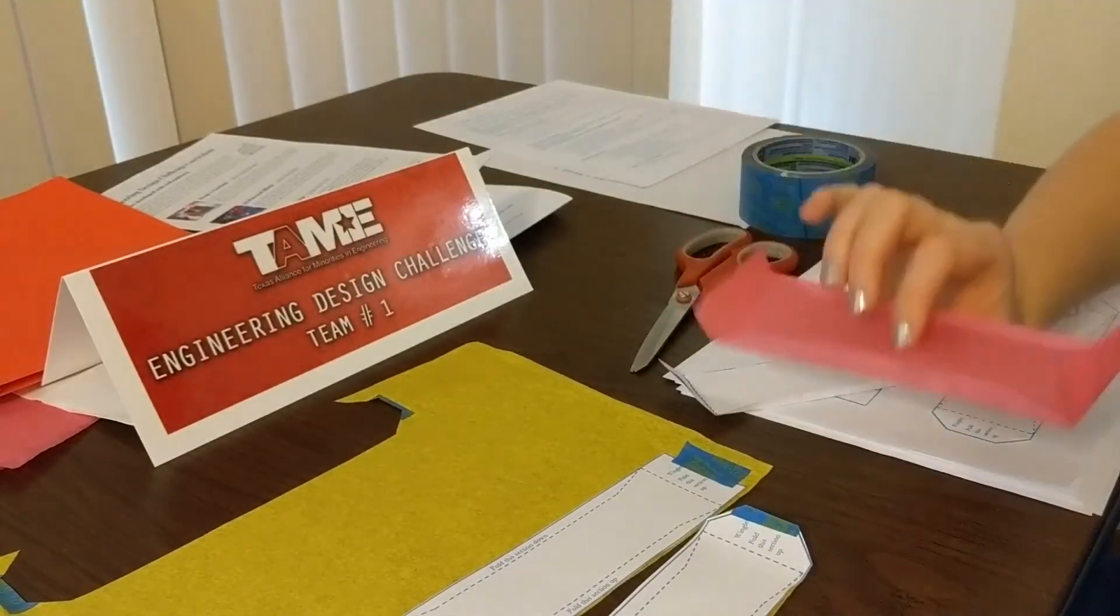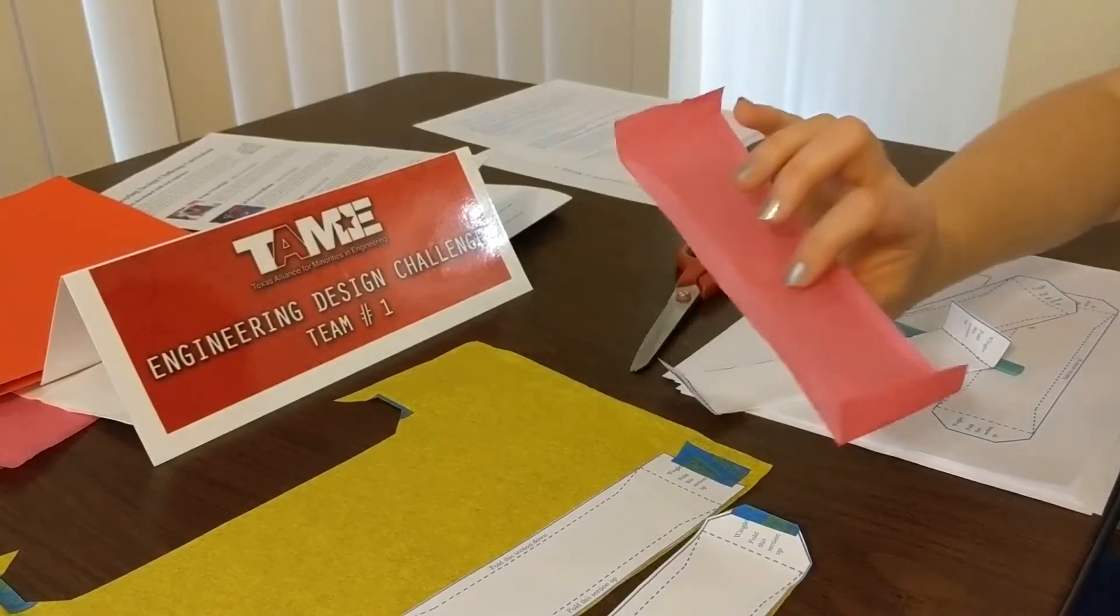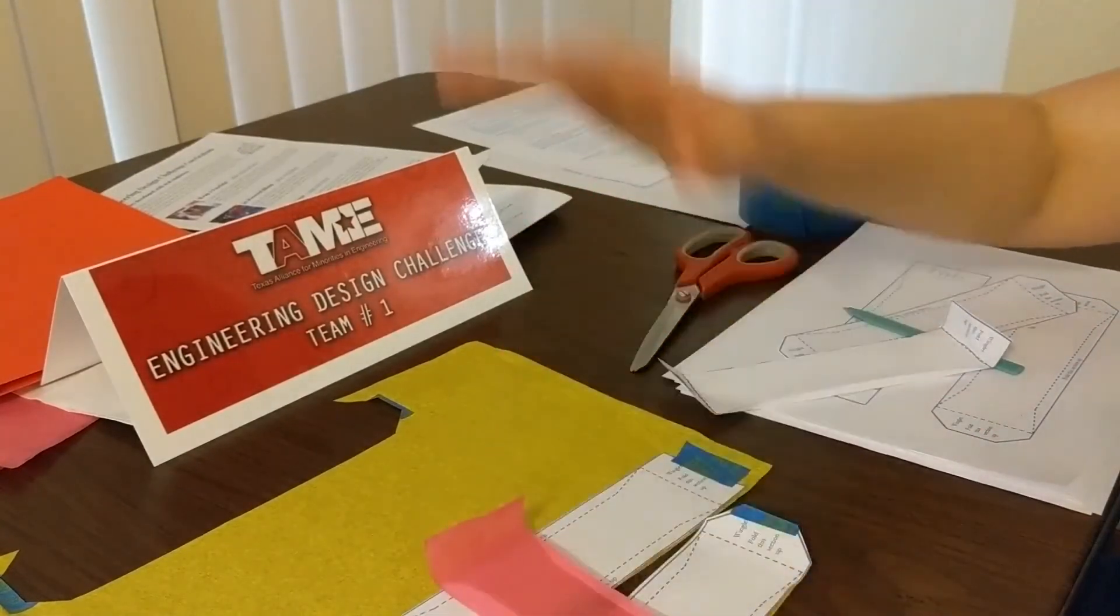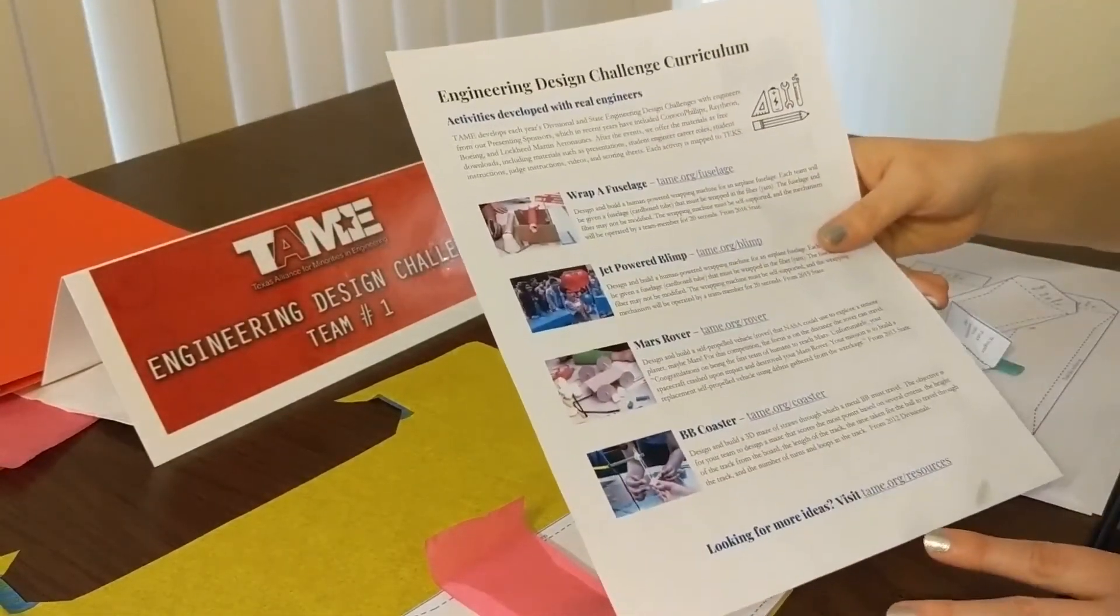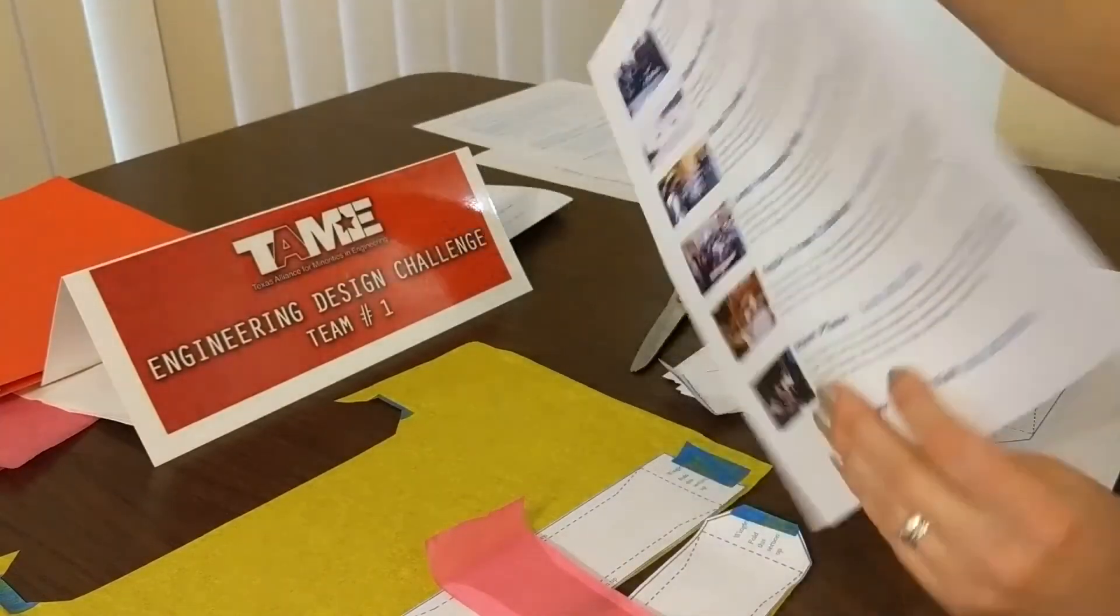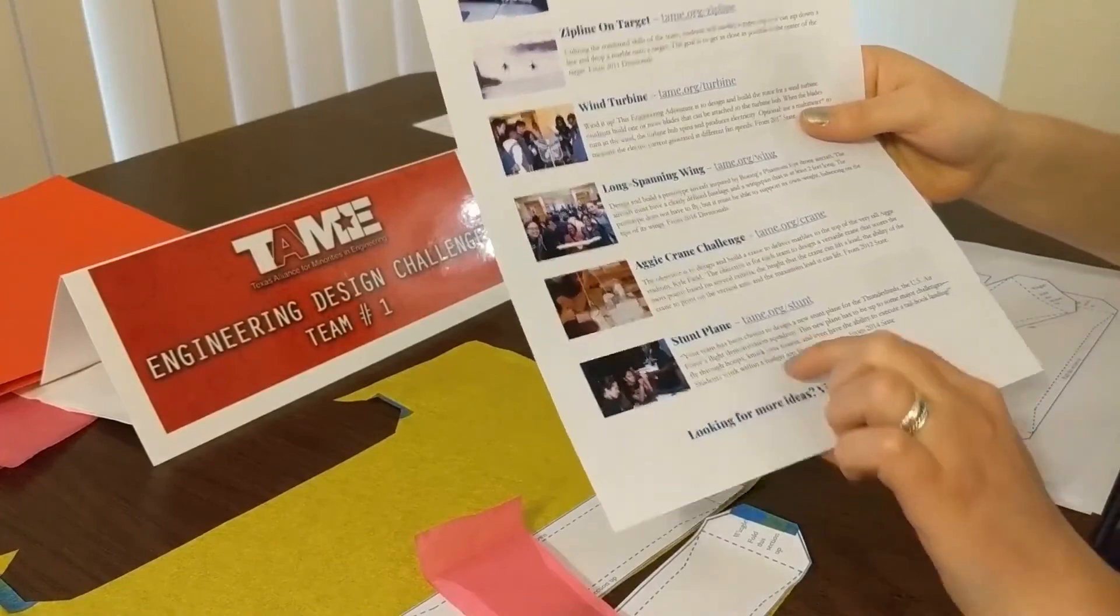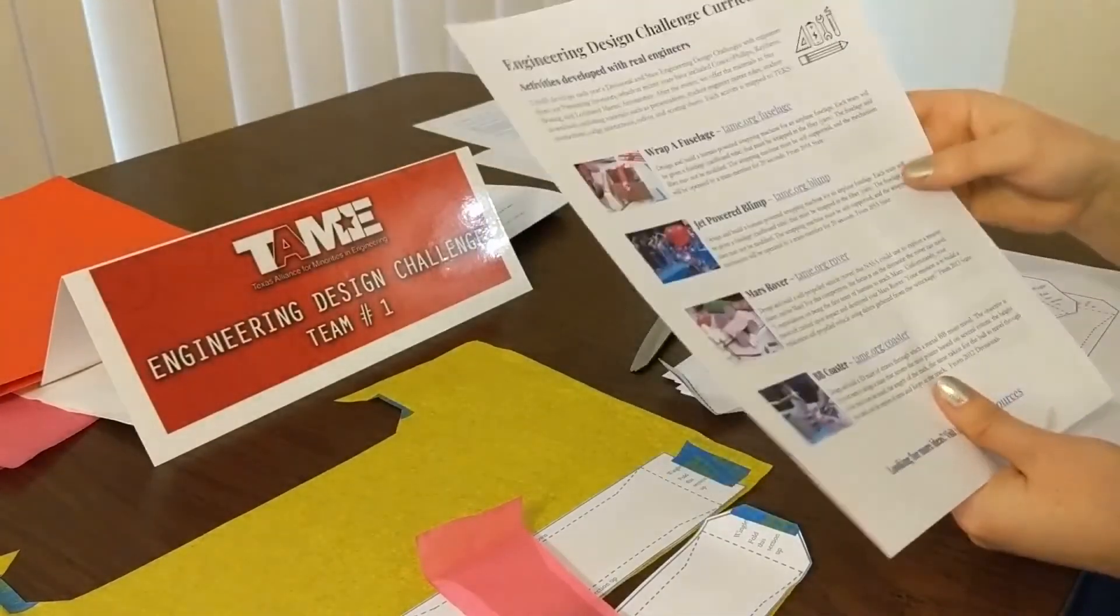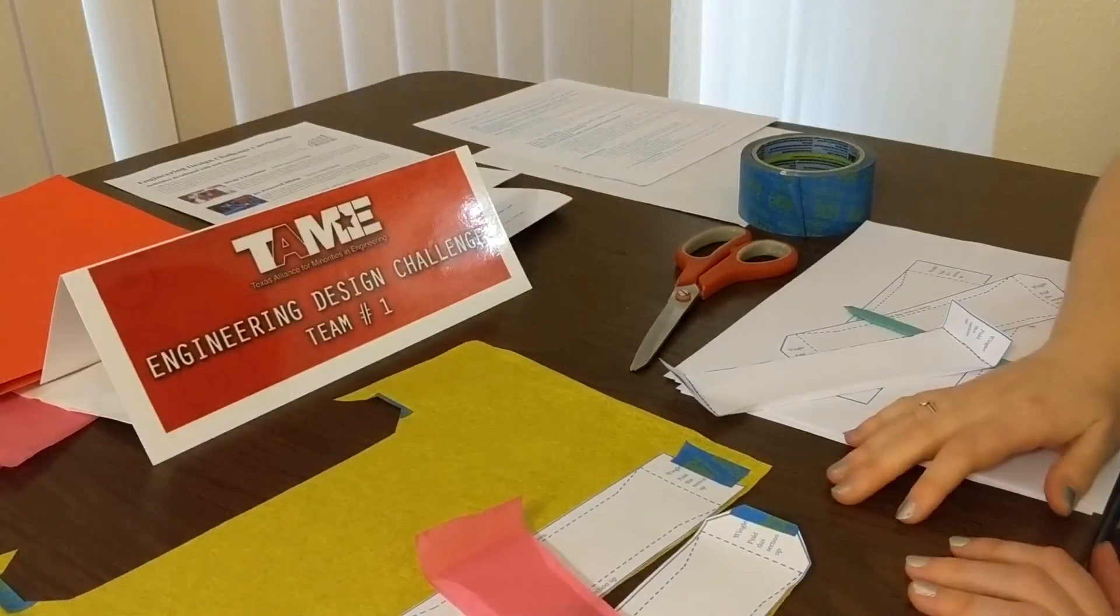So practice with it, have fun, experiment. That's what STEM is all about. Trying new things. If you're enjoying this activity, I do want to encourage you to check out tame.org. We've got tons of free resources and downloads. If you're enjoying the tumble wing, check out our stunt plane activity, which was designed with engineers from Lockheed Martin Aeronautics where they build fighter jets. So check that out and have fun with this.